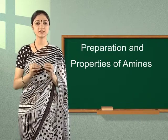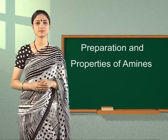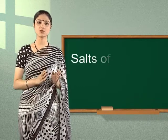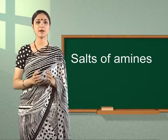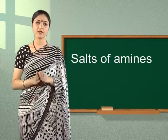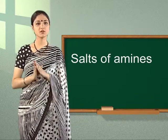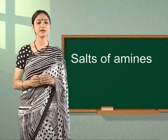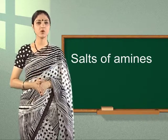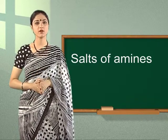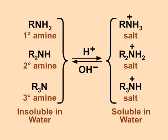Let us now learn about salts of amines. Aliphatic amines are about as basic as ammonia, whereas aromatic amines are considerably less basic. Aqueous mineral acids or carboxylic acids readily convert amines into their salts. Aqueous hydroxide readily converts the salts back into the free amines.